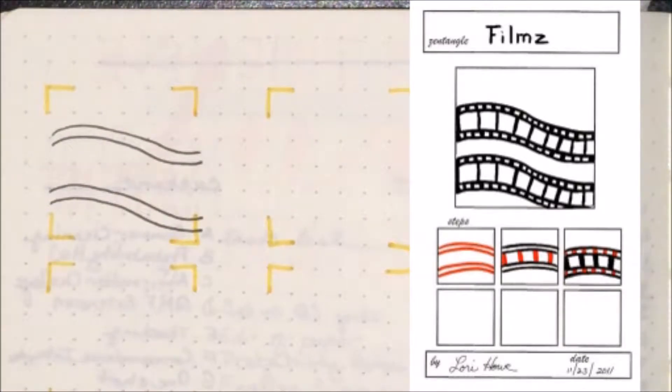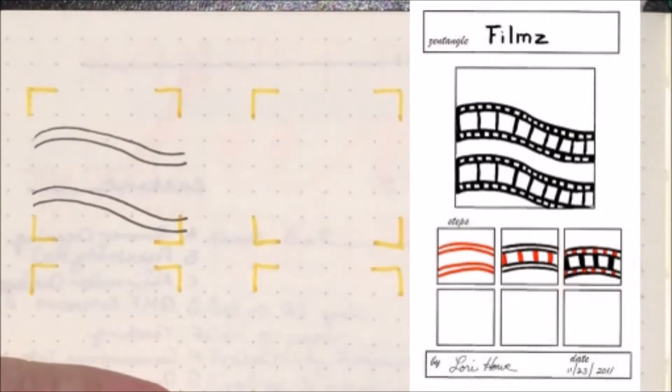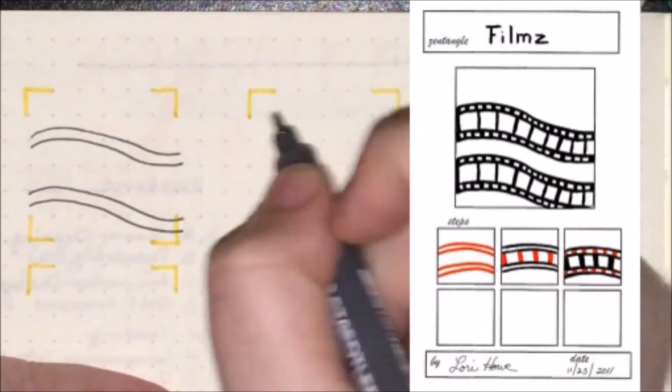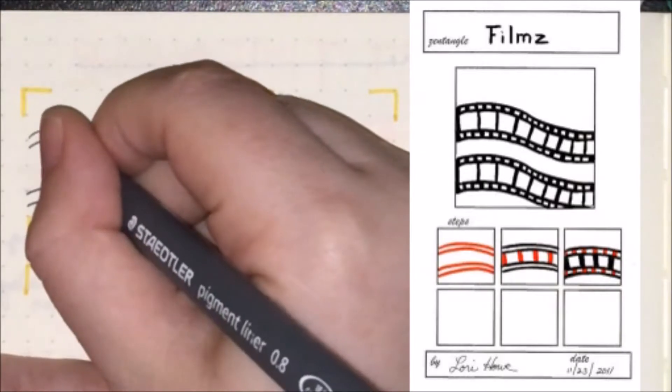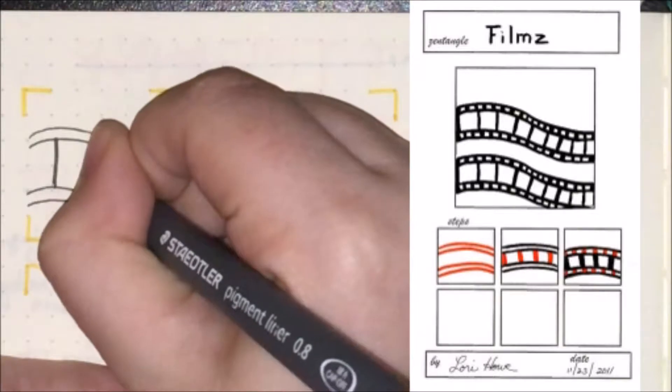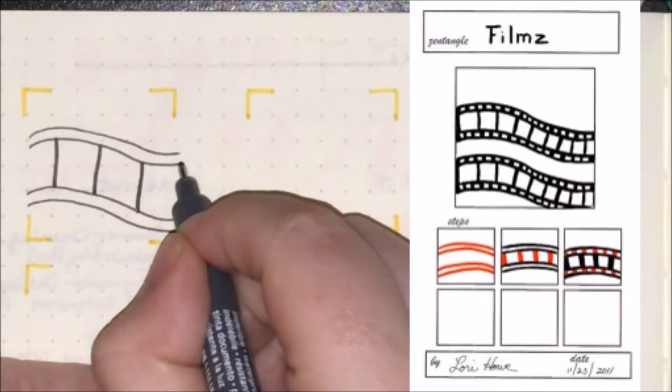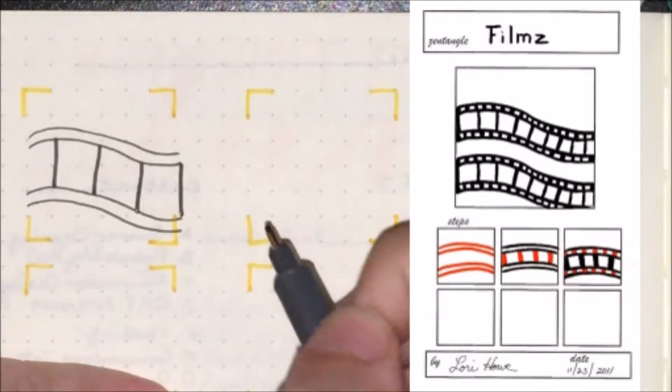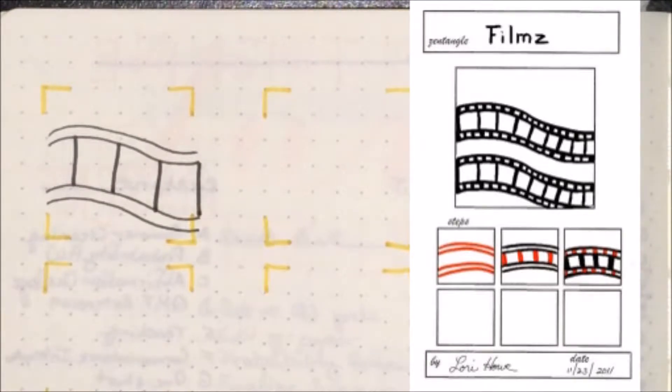Once those lines are in place, what you're going to want to do—and I recommend using a slightly thicker pen for this—is you just want to draw lines that connect the inner two curves that you drew together, and you want to have nice little sizable squares or rectangles in between.